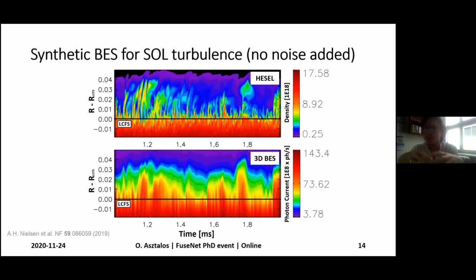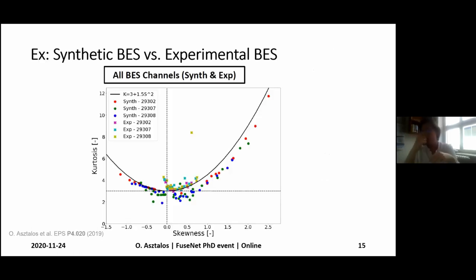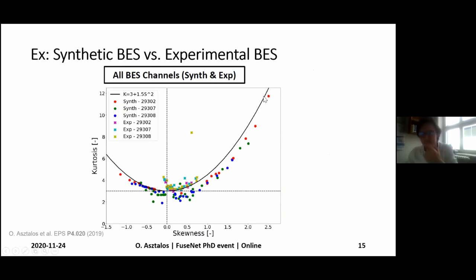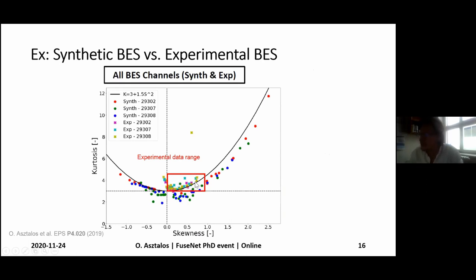Looking at some statistical properties of these signals, these dots are essentially synthetic signals for various models, and what we expect is that they should be close to or hugging this particular curve given by theoretical computations — which they actually do, and we like it. However, the experimental values for the corresponding signals are actually pushed downwards to this particular box region, and they show a systematic discrepancy.